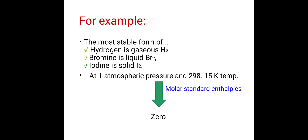For example, when we consider the most stable form of hydrogen, that hydrogen is gaseous H₂. The most stable form of bromine is liquid Br₂. When we use bromine in the laboratory, that bromine is in a liquid state, which is its stable state. And the most stable form of iodine is solid iodine. When we use iodine in our laboratory, that iodine is in solid form, which is its most stable form. So these elements are present in their respective stable forms.